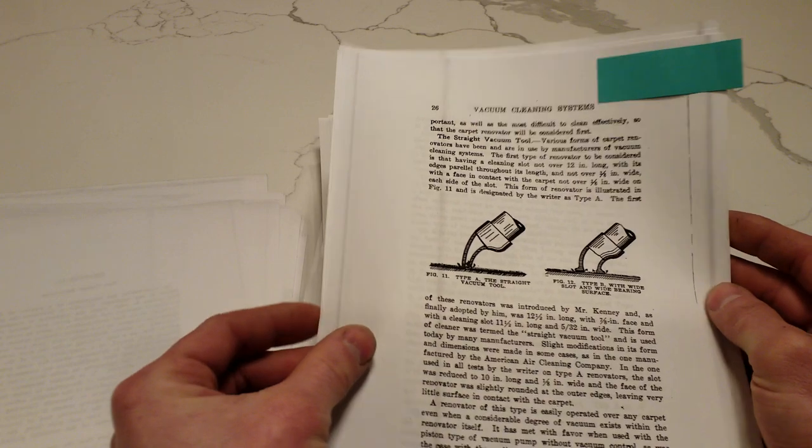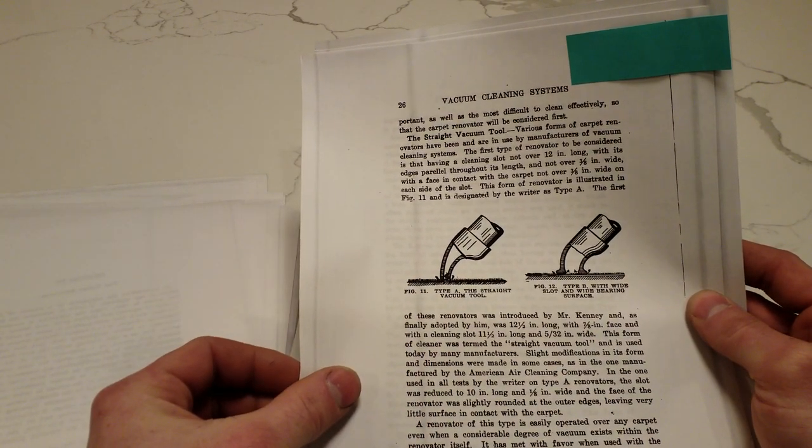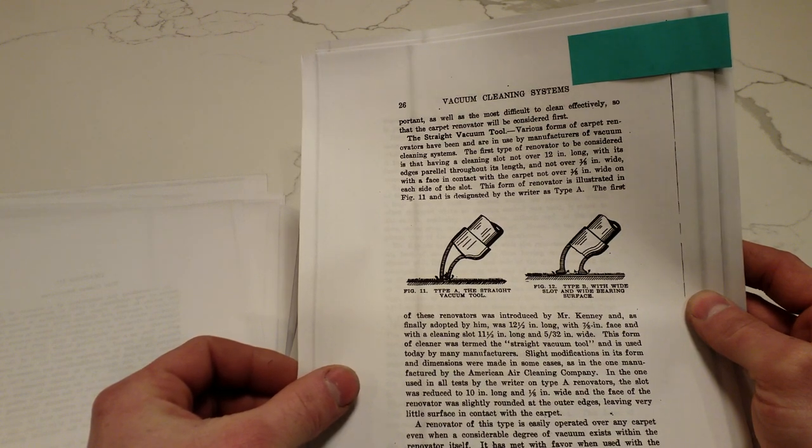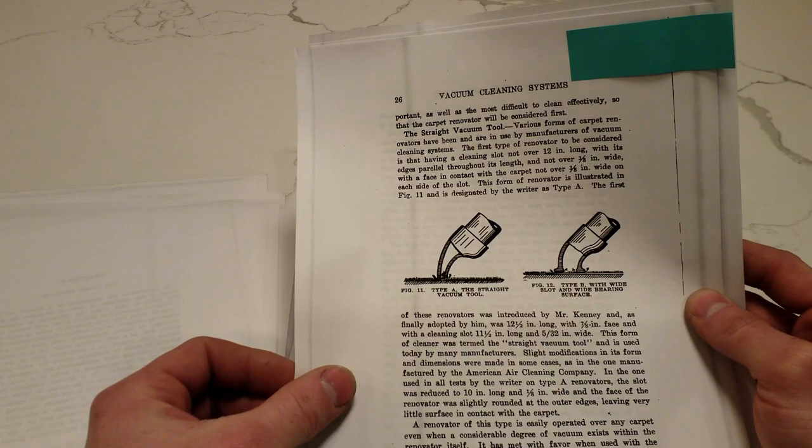This talks about renovators, starting with the type A, the straight slot carpet tool, the narrowest slot. 12 inches long, not over 3 eighths of an inch wide.